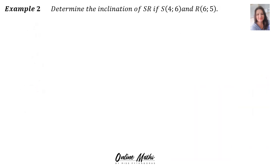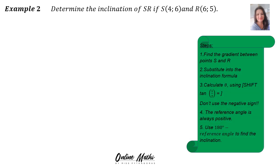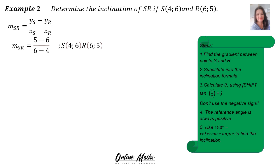Example 2. Determine the inclination of line SR if S is the point (4, 6) and R is the point (6, 5). Again there are steps. Step 1: we calculate the gradient of line SR using the gradient formula. We substitute the coordinates — on top: 5 minus 6, and at the bottom (denominator): 6 minus 4 — and we work out that the gradient of SR is negative 1.